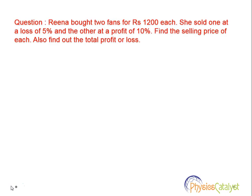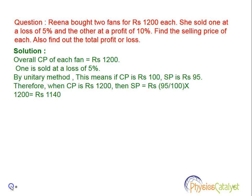Now let's take a look at a question based on profit and loss. Rena bought two fans at rupees 1200 each. She sold one at a loss of 5% and another at a profit of 10%. Find the selling price of each fan and also find the total profit or loss.